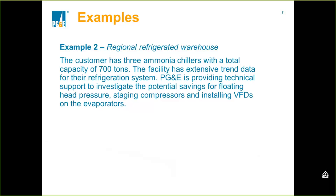Hello and thanks for joining us for example two of the refrigeration standard tool calculator. This is a more complicated example than example one — this is for a regional refrigerated warehouse. The customer has three ammonia chillers with a total capacity of 700 tons. Through an energy audit done by a PG&E engineer, three measures were identified: floating head pressure, restaging the compressors, and installing VFDs on the evaporator fans.